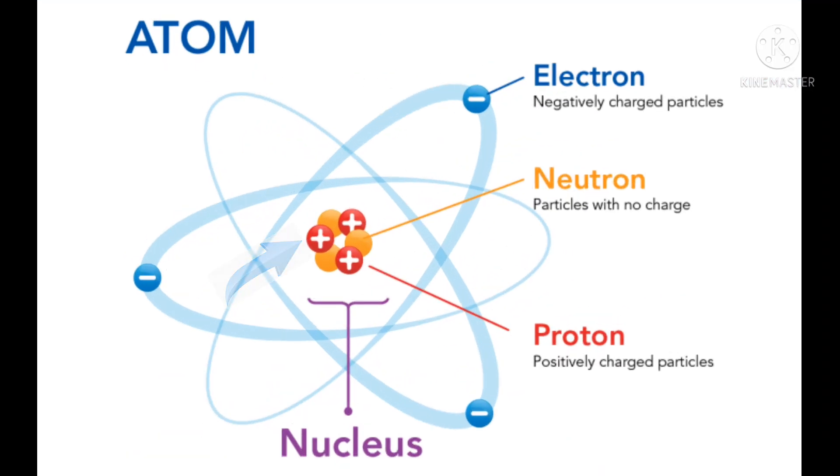Protons are positively charged particles situated in the nucleus. The number of protons in an atom tells us what kind of element it is and its atomic number.